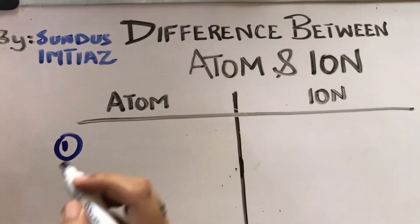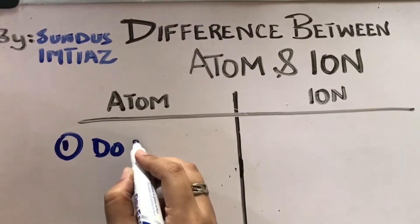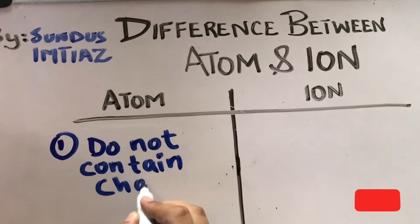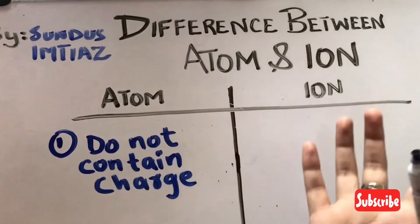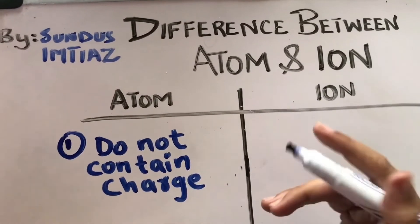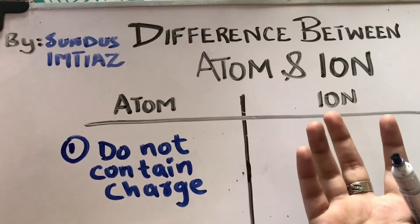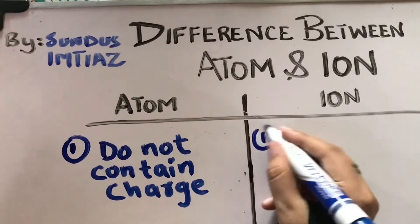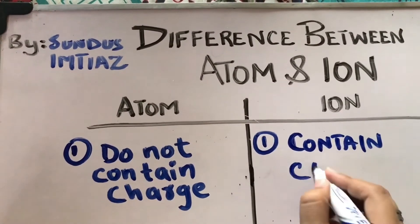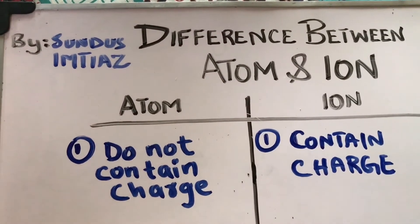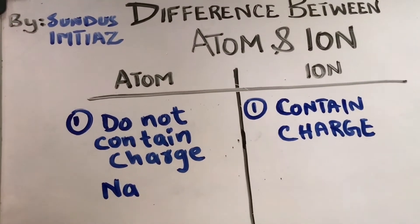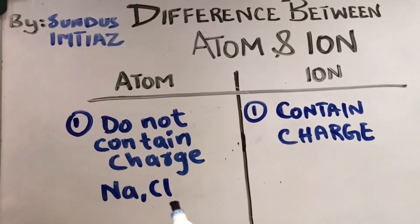so atom is an element that do not contain any charge. We can write that do not contain charge, either positive or either negative. Let's see the example here. We can write that when I talk about sodium, sodium is an atom, or Cl means chloride, chloride is also an atom